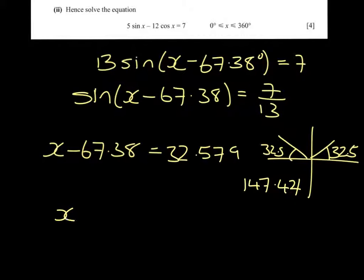That means x equals 32.579 plus 67.38, which is 100 to three significant figures. And adding 67.38 to 147.421, we get 215 to three significant figures.